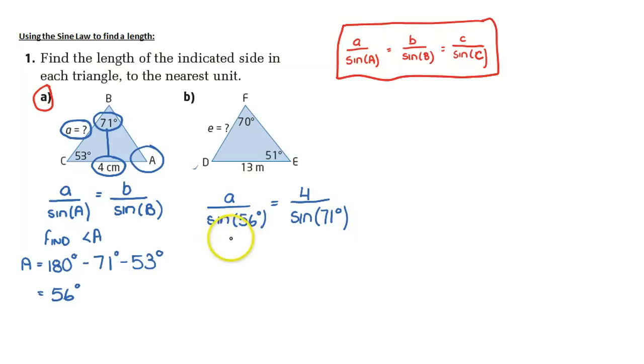I'm going to multiply both sides by sine of 56 degrees to get a is equal to 4 over sine of 77 degrees times sine of 56 degrees.